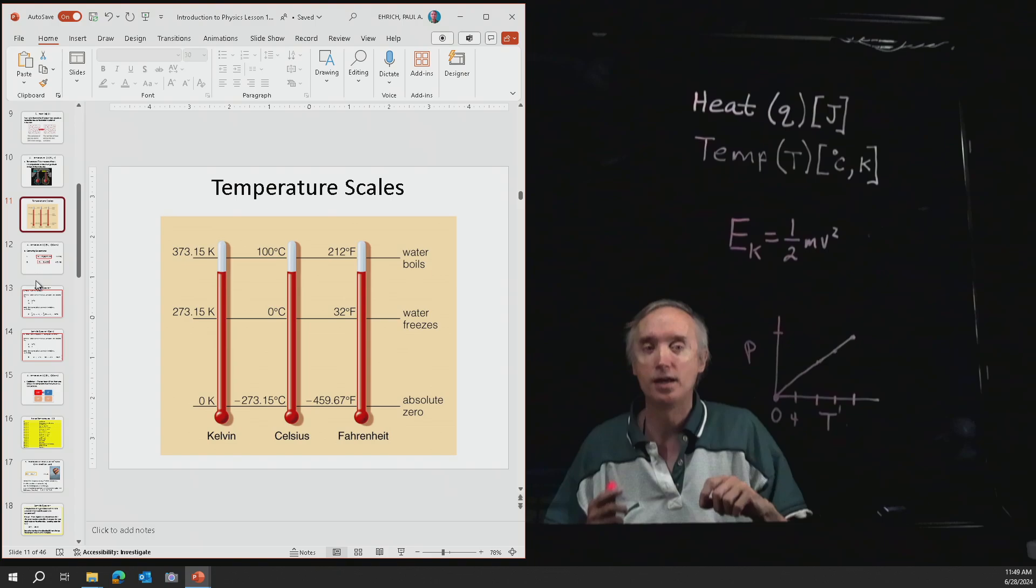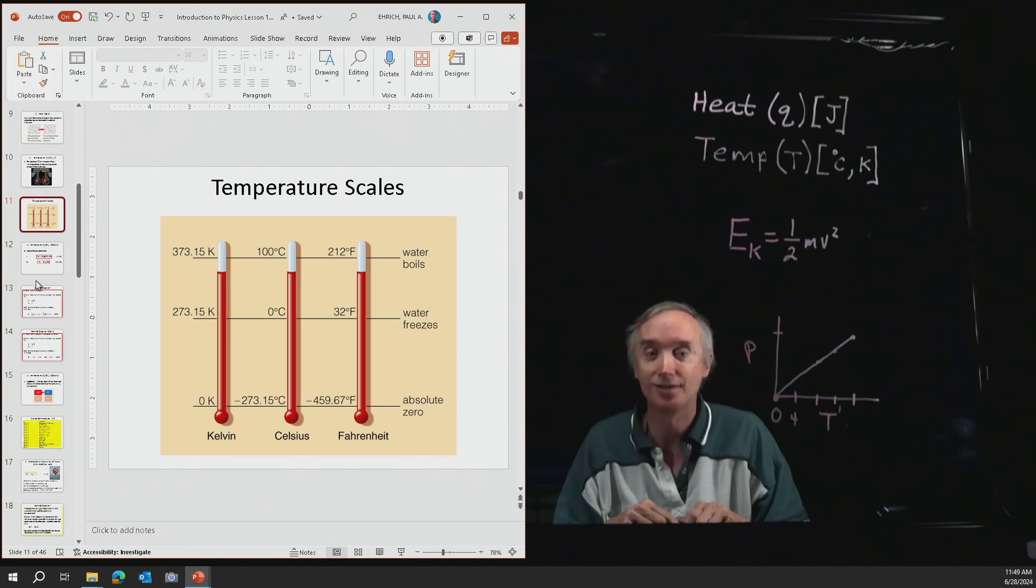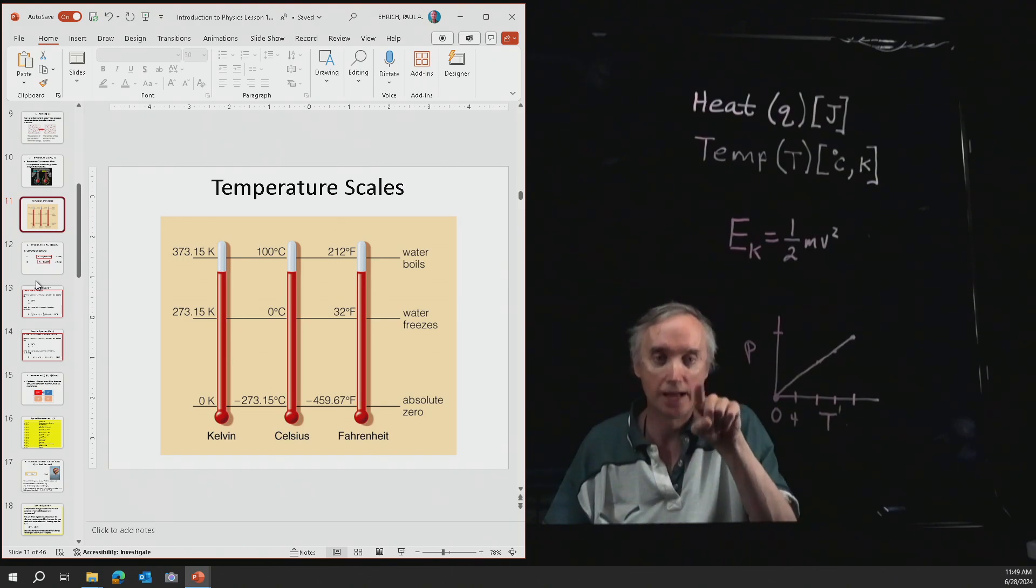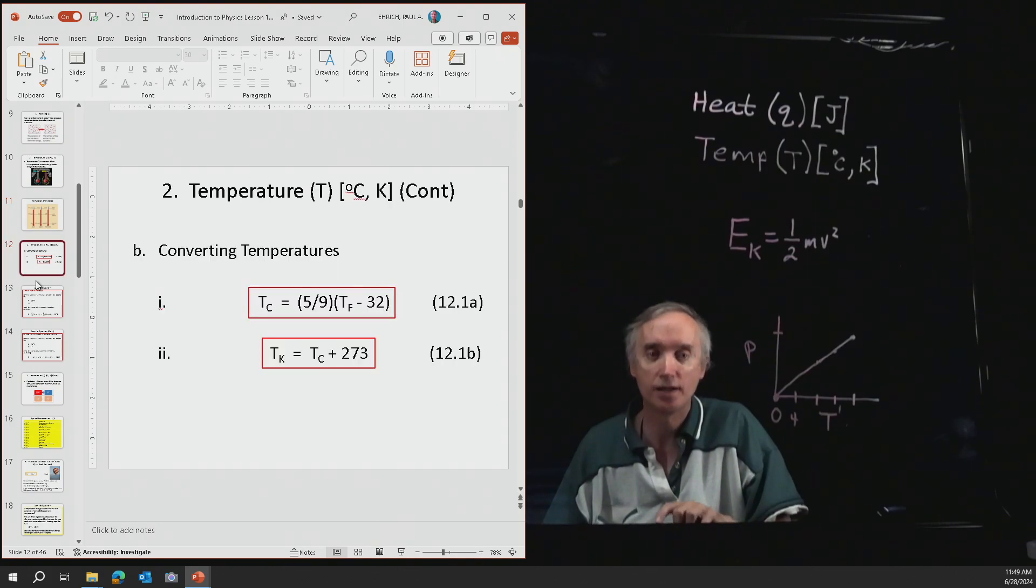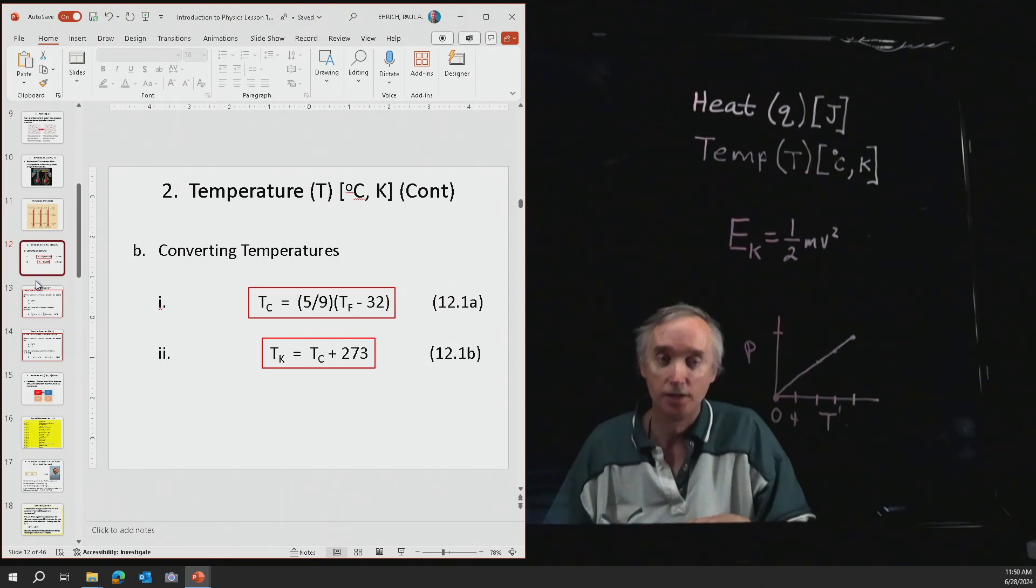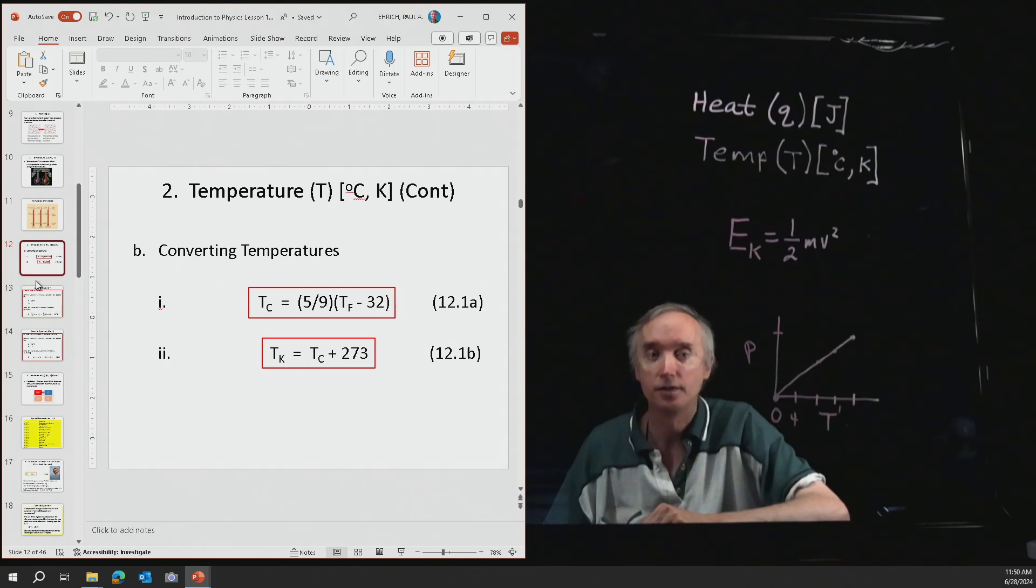The metric unit for temperature is the degree Celsius, but the official metric unit for temperature is going to be the kelvin. Now, how are we going to convert back and forth from these three different kinds of temperatures? And so that's where these two formulas come into play. The first one says that the temperature in Celsius is going to be equal to 5 ninths, the temperature in Fahrenheit, minus 32.